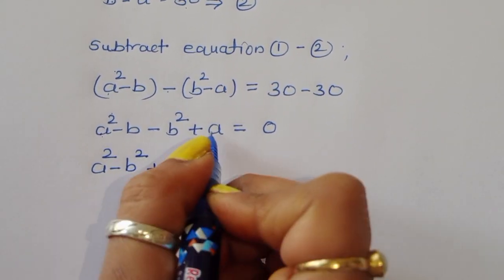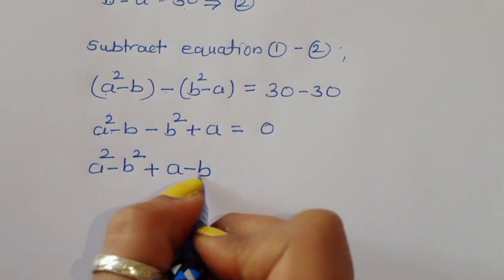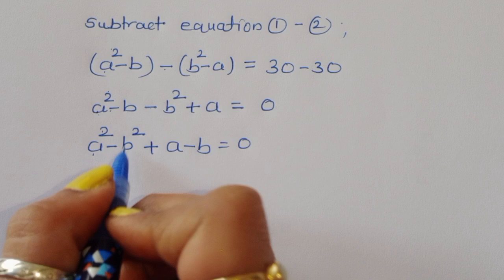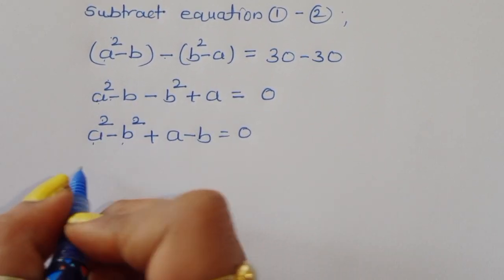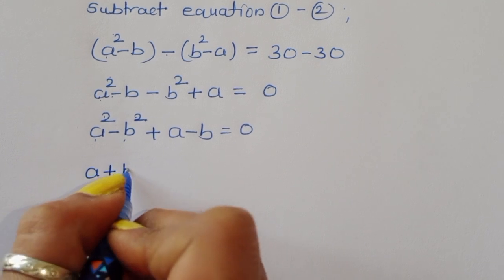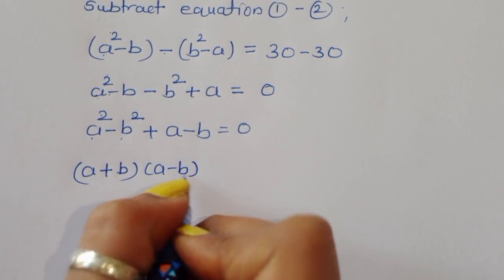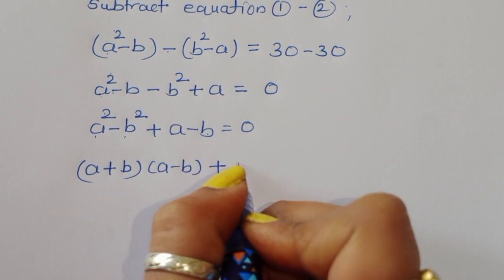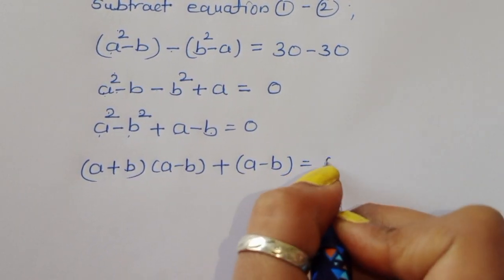Rearranging: a squared minus b squared plus a minus b equals 0. We know the formula for a squared minus b squared is (a plus b)(a minus b). Substituting that in: (a plus b)(a minus b) plus (a minus b) equals 0.